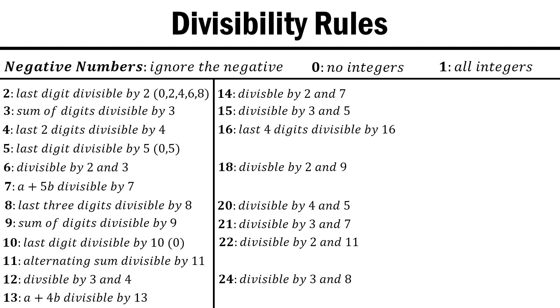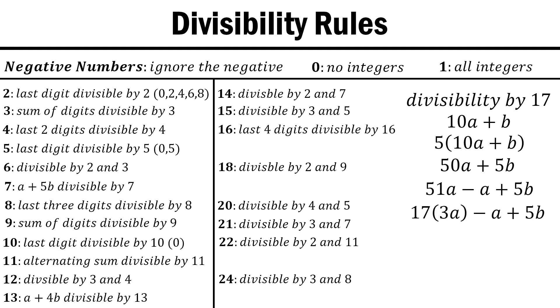For our next three numbers, we're going to have three very similar rules, so let's go through them quickly. For 17, we multiply 10a plus b by 5 to get 50a plus 5b. We turn 50a into 51a minus a, and then since 17 times 3 is equal to 51, we only have to check negative a plus 5b.